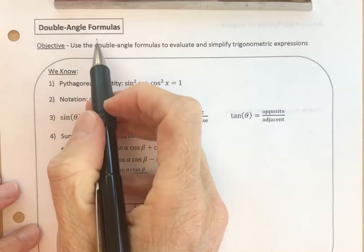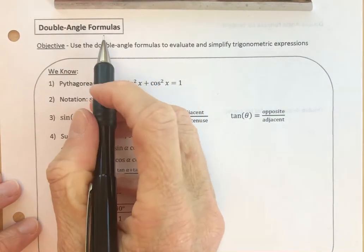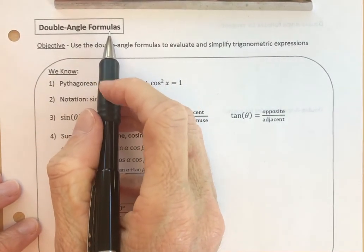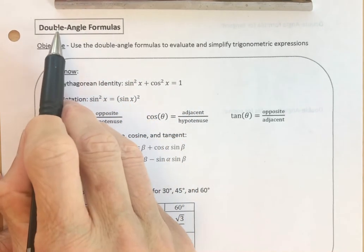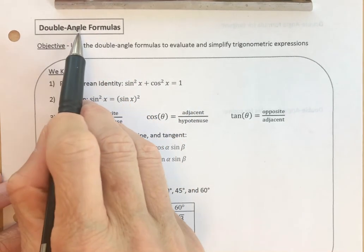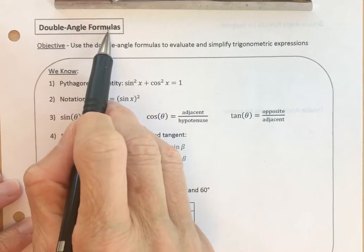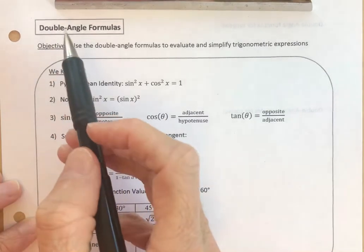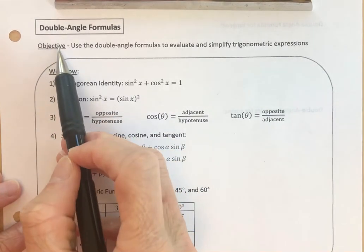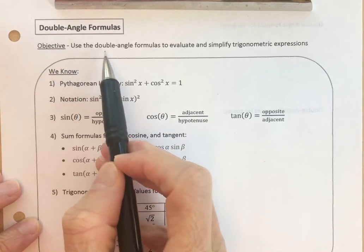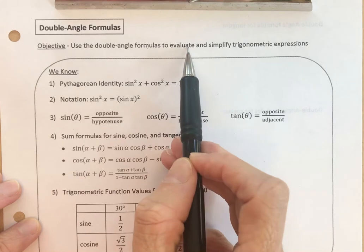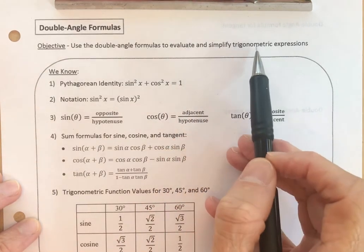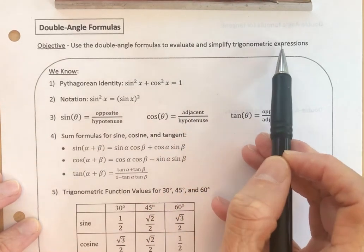Continuing our look at trigonometric formulas, in this video we're going to take a look at the double angle formulas for sine, cosine, and tangent. Our objective is to use the double angle formulas to evaluate and simplify trigonometric expressions.